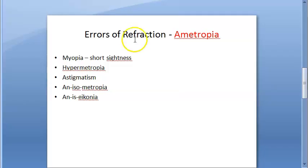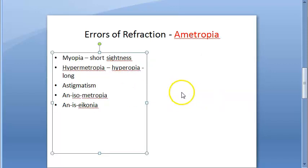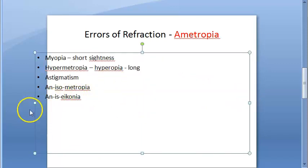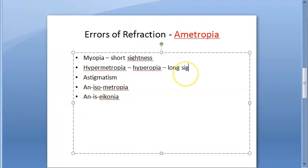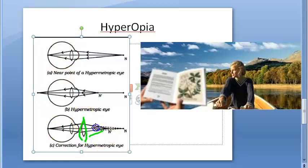Now let us look at hypermetropia, also called hyperopia — long-sightedness. In hyperopia, the image is being formed behind the retina when accommodation is at rest. This is long-sightedness and will get corrected with a convex lens, which has positive power. There are many types of hyperopia or hypermetropia, but we are not going into the details now.